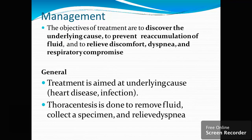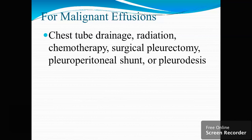In management, the goal is to discover the underlying cause, prevent extra fluid accumulation, and relieve discomfort, dyspnea, and respiratory compromise. We treat the underlying cause such as heart disease or infection. Thoracentesis is done to remove fluid, collect specimens, and relieve dyspnea. For malignant effusion, chest tube drainage, radiation, chemotherapy, surgical pleurectomy, or pleuroperitoneal shunt insertion may be done.